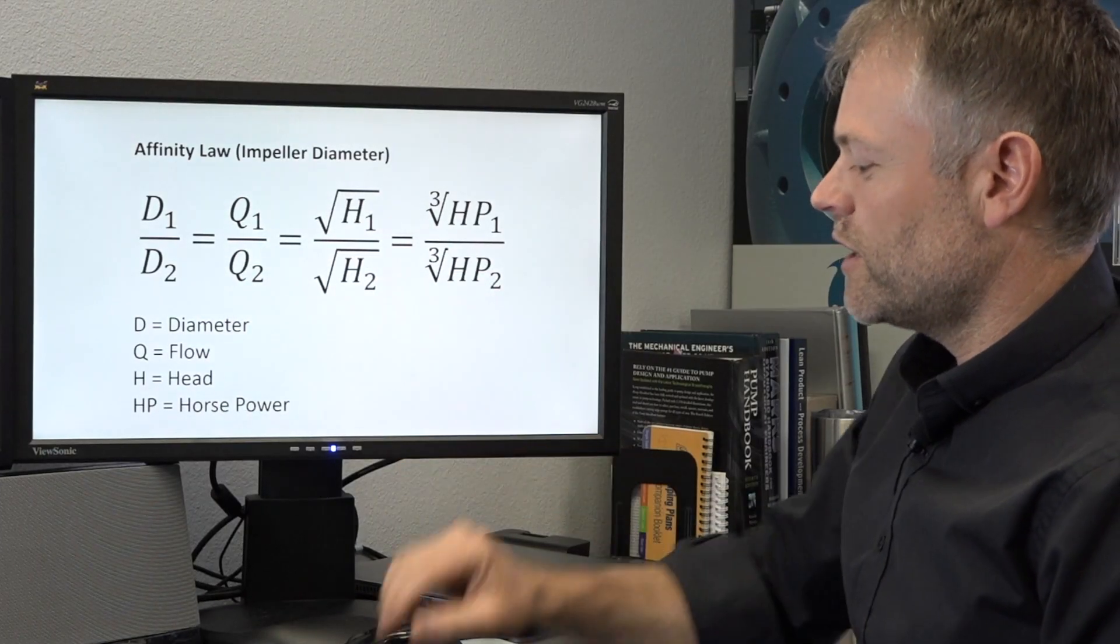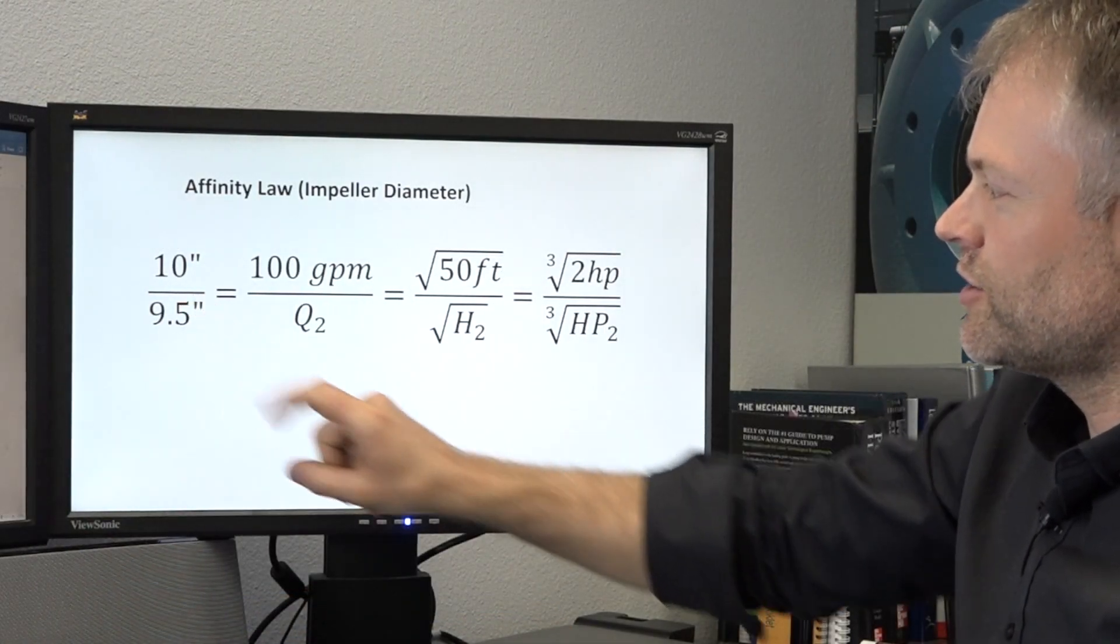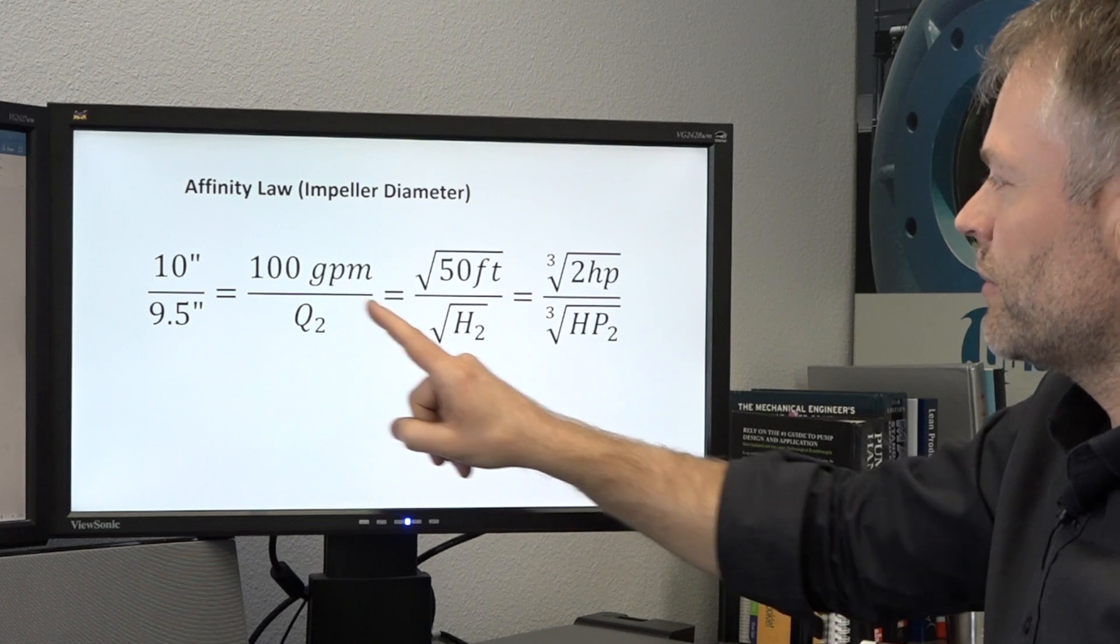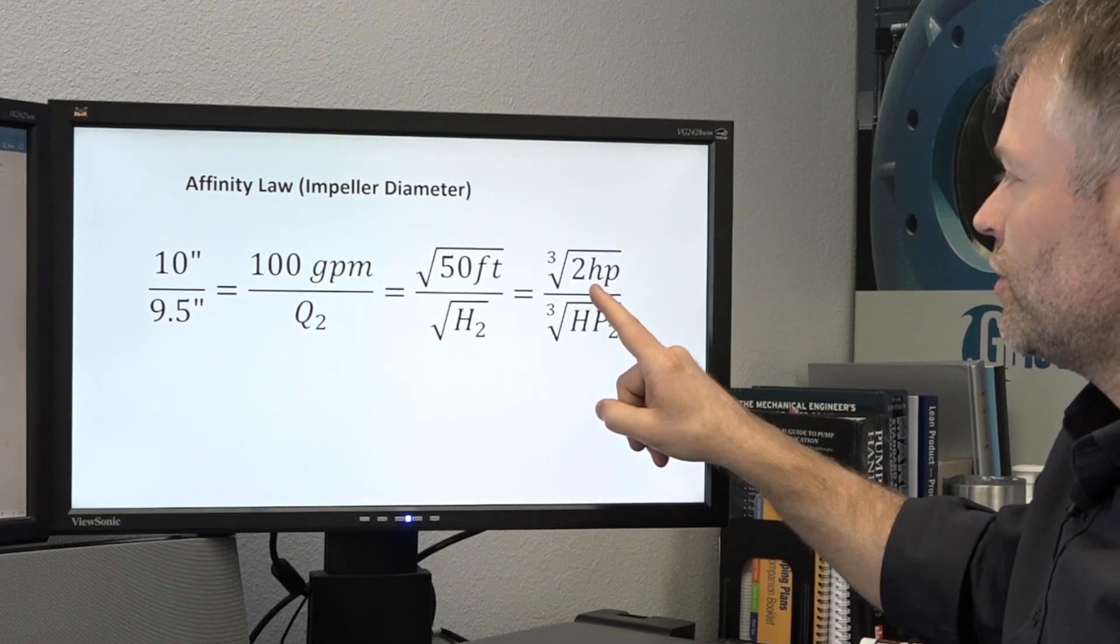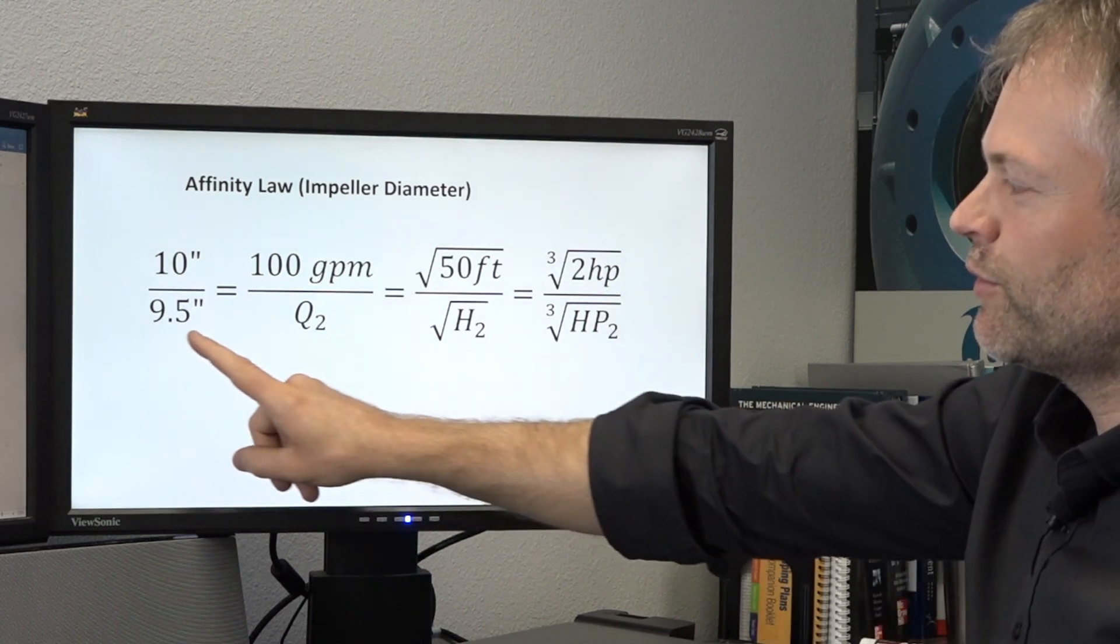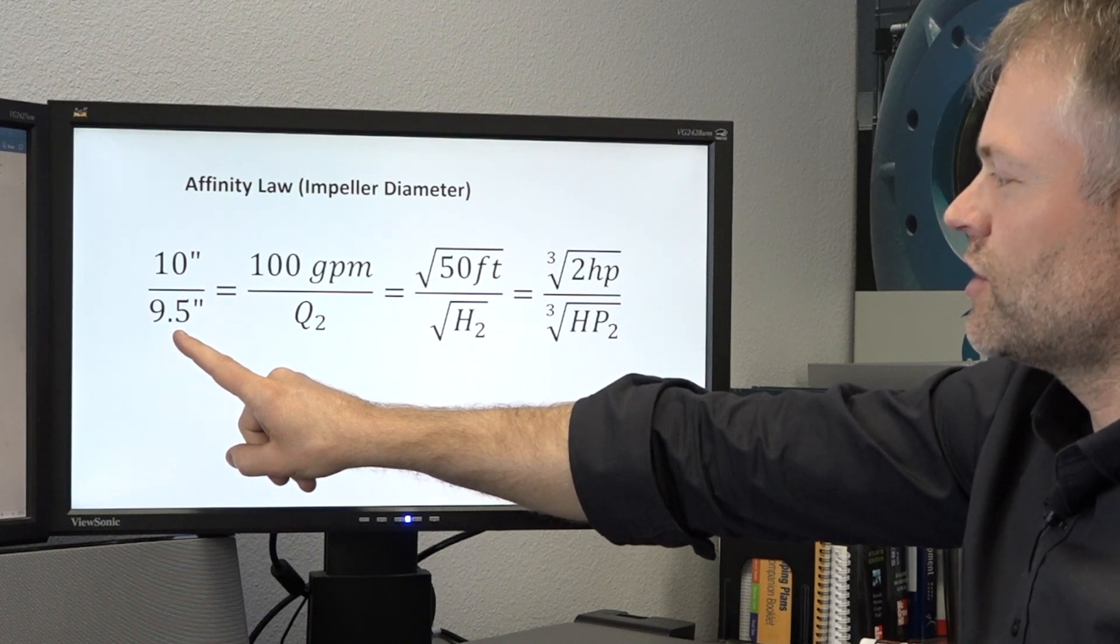So now let's use this equation in an example. Let's say that we have a pump with a 10 inch diameter impeller that's operating at 100 gallons per minute with 50 feet of head and two horsepower. We want to understand how the pump's going to perform if we change the impeller to a nine and a half inch diameter.